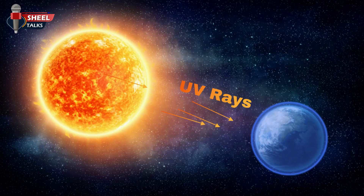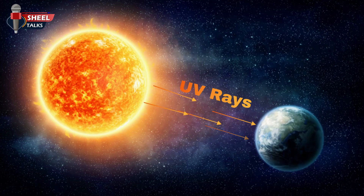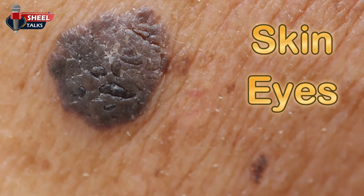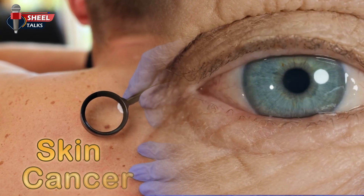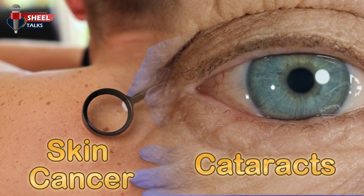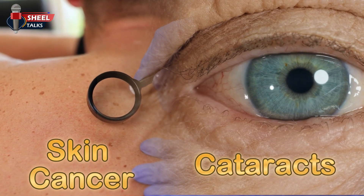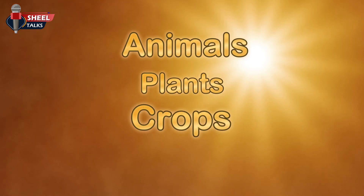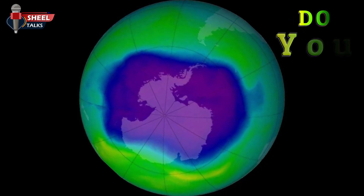It protects us from the harmful ultraviolet rays of the sun. If this layer did not exist, these rays would directly fall on the earth, badly affecting our skin and eyes. This could lead to skin cancer, cataracts, and many other health-related problems. Not only this, but ozone depletion can also harm animals, plants, crops, and marine life.